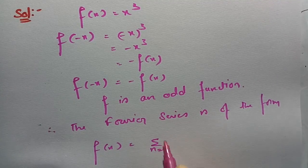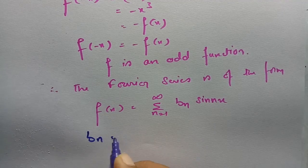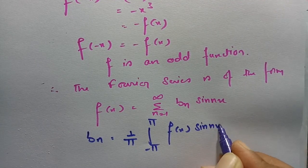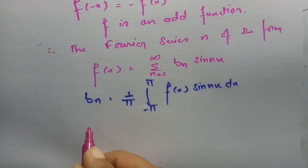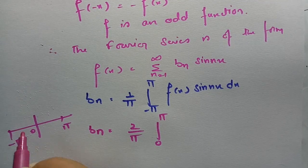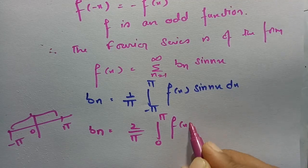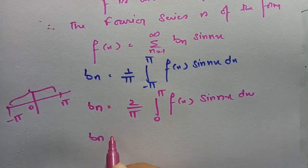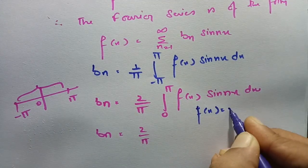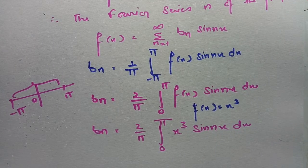Since it's an odd function, we only need to find bₙ. The formula for bₙ is: bₙ = (1/π) ∫₋π^π f(x) sin(nx) dx. Instead of calculating from -π to π, we use the simplification: bₙ = (2/π) ∫₀^π f(x) sin(nx) dx. Since f(x) = x³, this becomes bₙ = (2/π) ∫₀^π x³ sin(nx) dx.